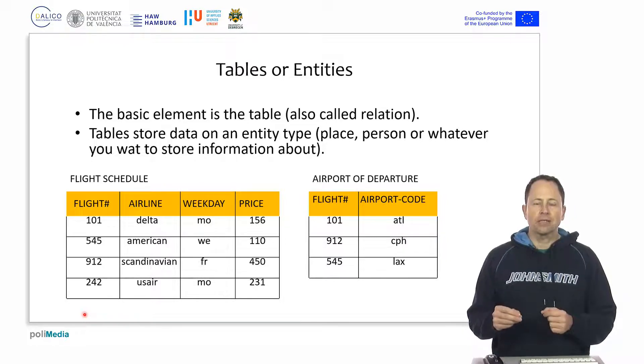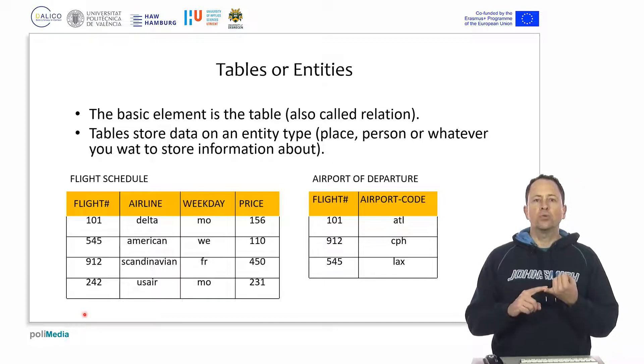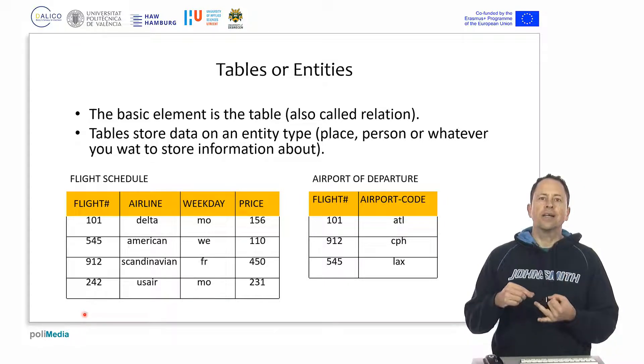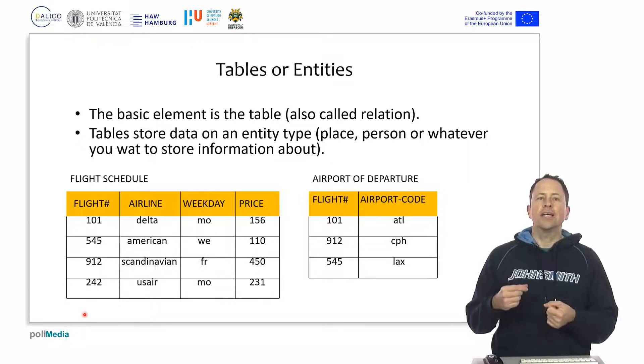For example, we could have a table for automobile-type entities and store its cylinder capacity, the diameter of the wheels, its color, or whether it is sporty.